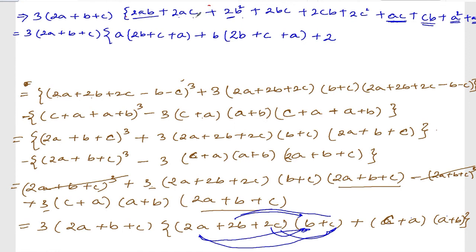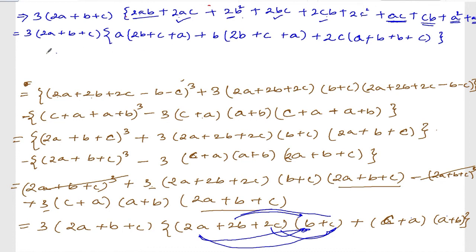Plus two. Now from what's remaining, we can take 2 common, and we can take 2c common. If I take 2c common from here it will be a. If I take 2c common it will be b, and it will be c. So a from here, from here it is b, plus from here it is b again because 2c is taken out common from here, 2c is out, plus c.